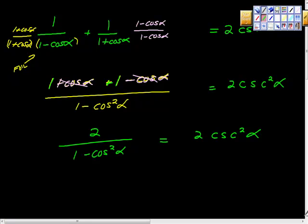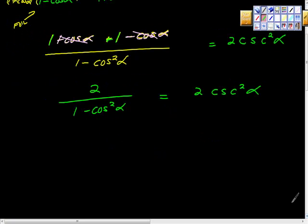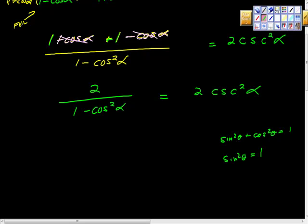Now I'm going to use a trick identity. The Pythagorean identity says sine squared theta plus cosine squared theta equals one. Solving for sine squared theta gives sine squared theta equals one minus cosine squared theta. I care about this because cosecant reminds me of one over sine, so I'm going to make a substitution using that equivalence.